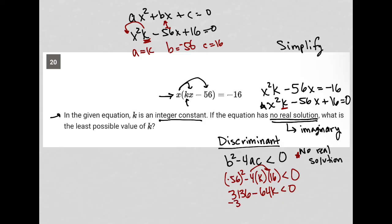Subtracting 3,136 from both sides gives -64k < -3,136.